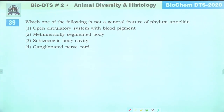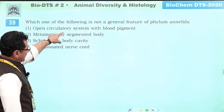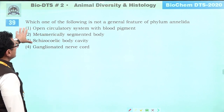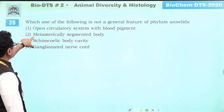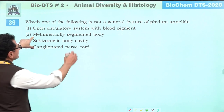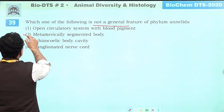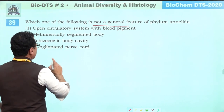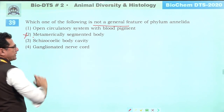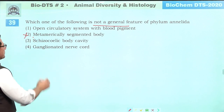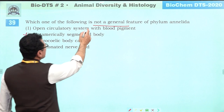Which is not a general feature of phylum Annelida? Annelida does not have an open circulatory system. Metamerically segmented body is not a feature of Mollusca. The question asks for what is NOT a general feature. Open circulatory system with blood pigment — Annelida has closed circulatory system. So answer is second.